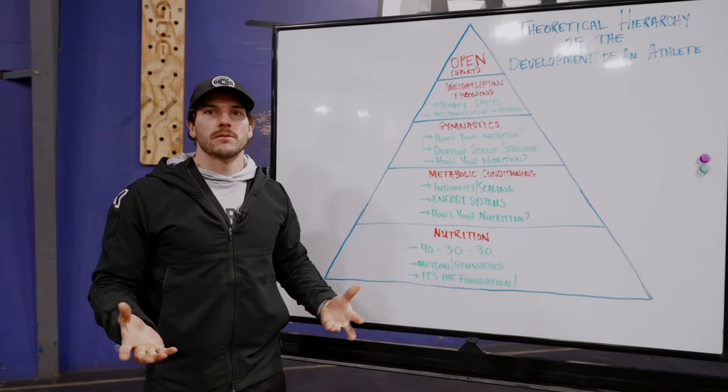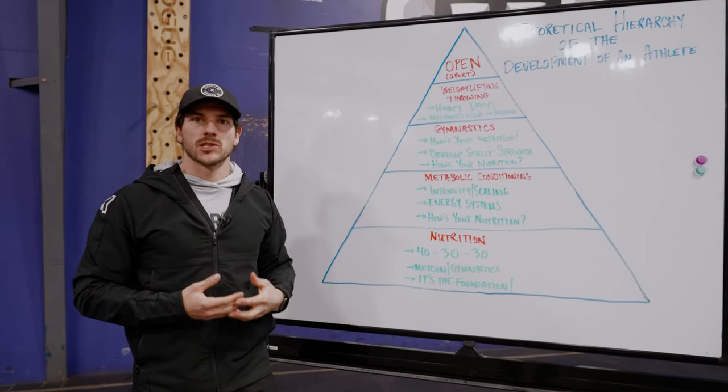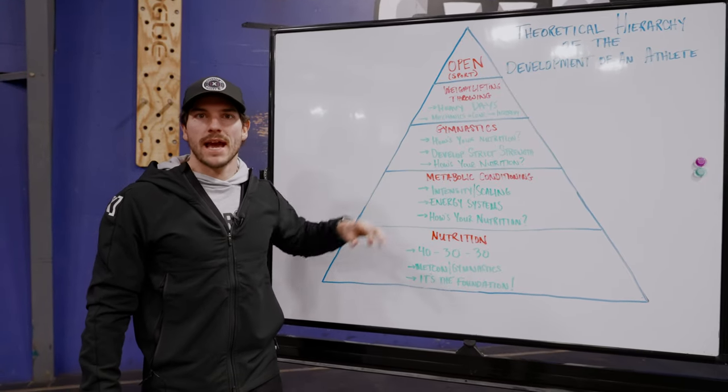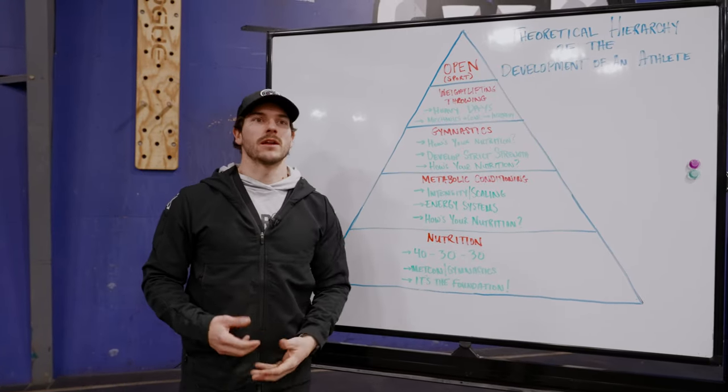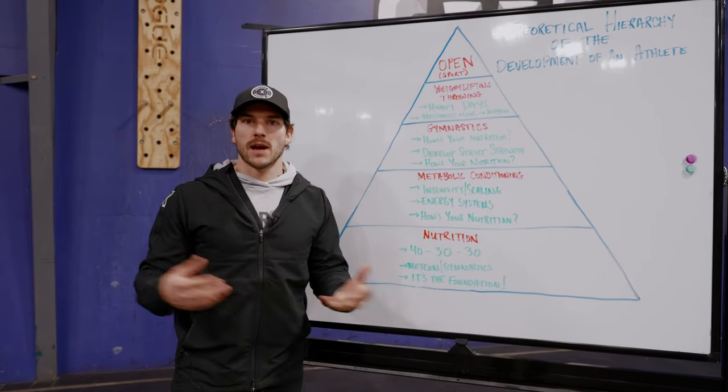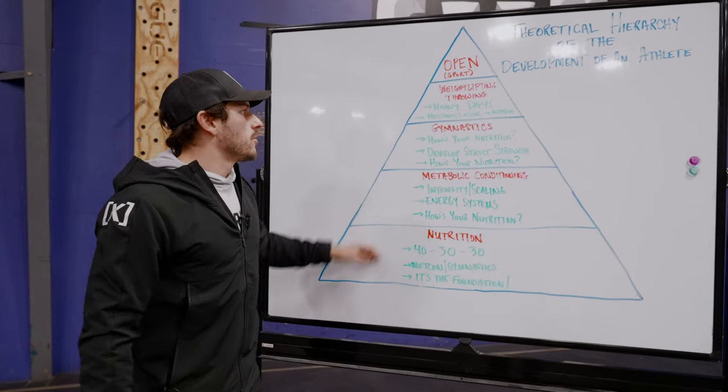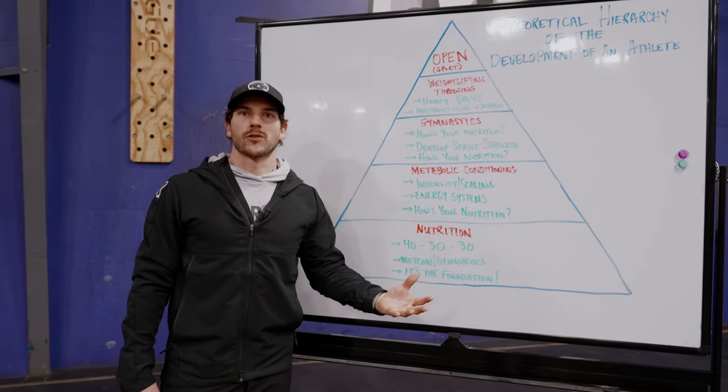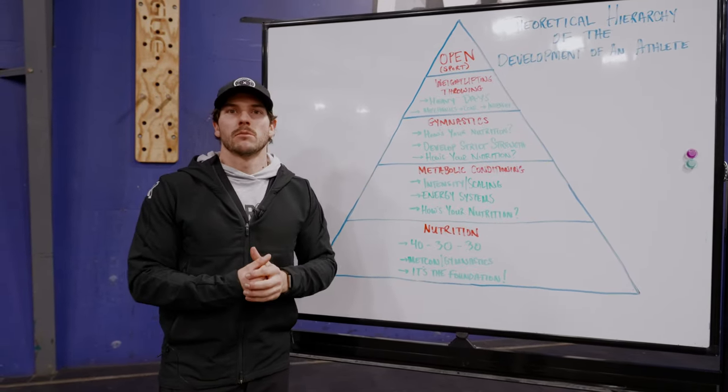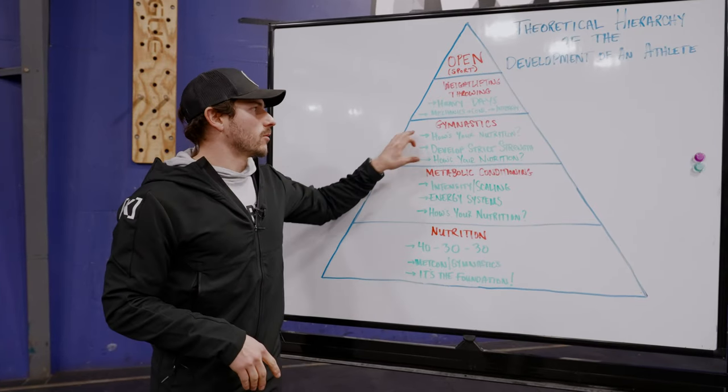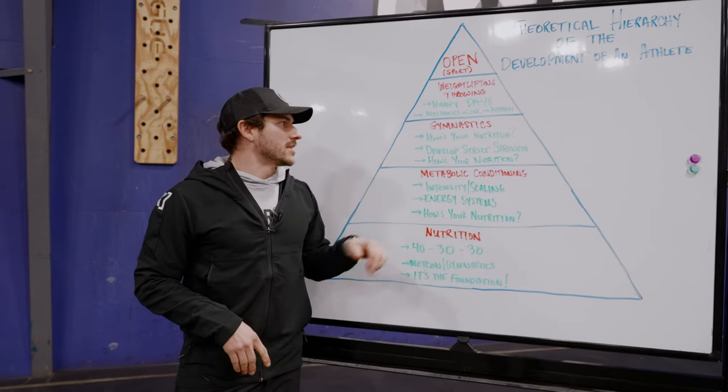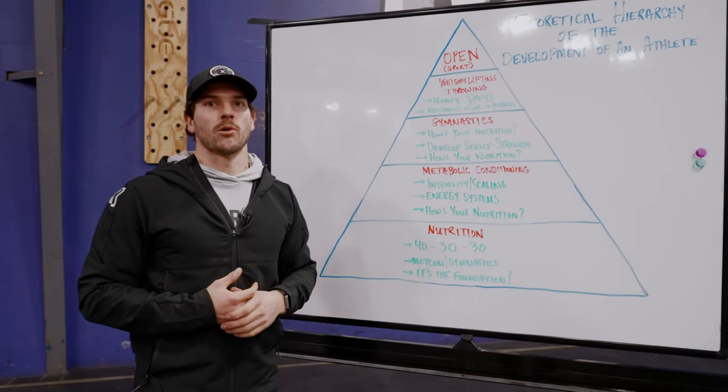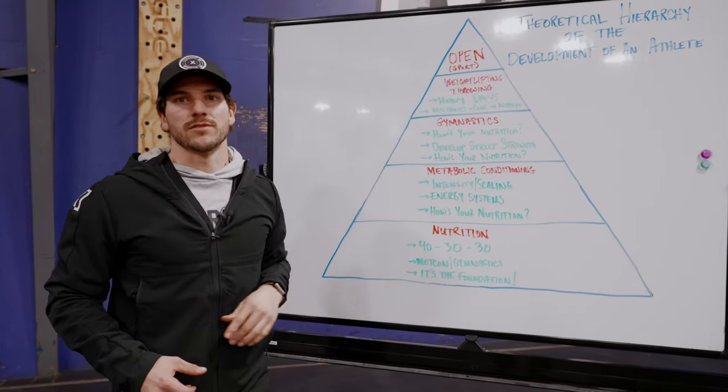So, if our gymnastics movements was the limiting factor for our athletes, let's start the conversation with our nutrition, making sure the athlete is actually at the appropriate bodyweight, lean body mass-to-bodyweight ratio, and then we can start from there talking about developing our strict strength. Maybe the athlete got their first ring muscle-up, and that's awesome, but they didn't have more than one. We can go back, once we've talked about nutrition, we can dial in that strict pulling, pressing strength, bodyweight strength that's so important before we even get to weightlifting and throwing.